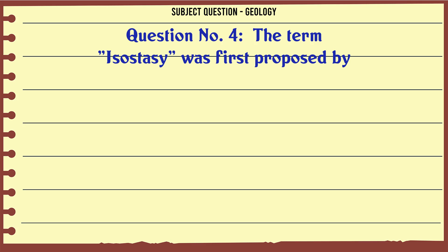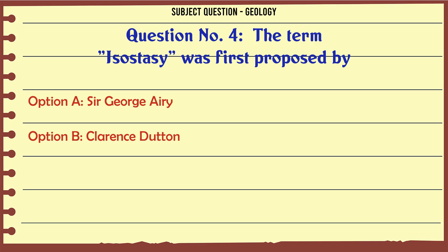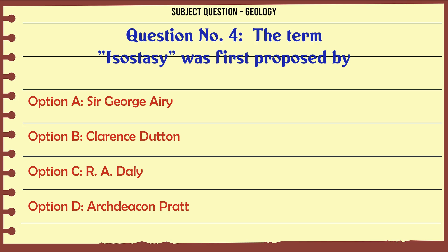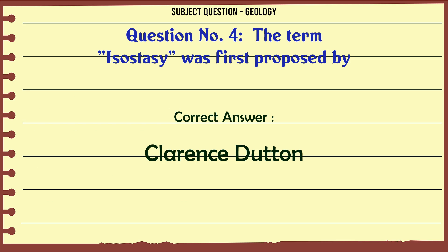The term 'isostasy' was first proposed by: A. Sir George Airey. B. Clarence Dutton. C. R.A. Daly. D. Archdeacon Pratt. The correct answer is Clarence Dutton.